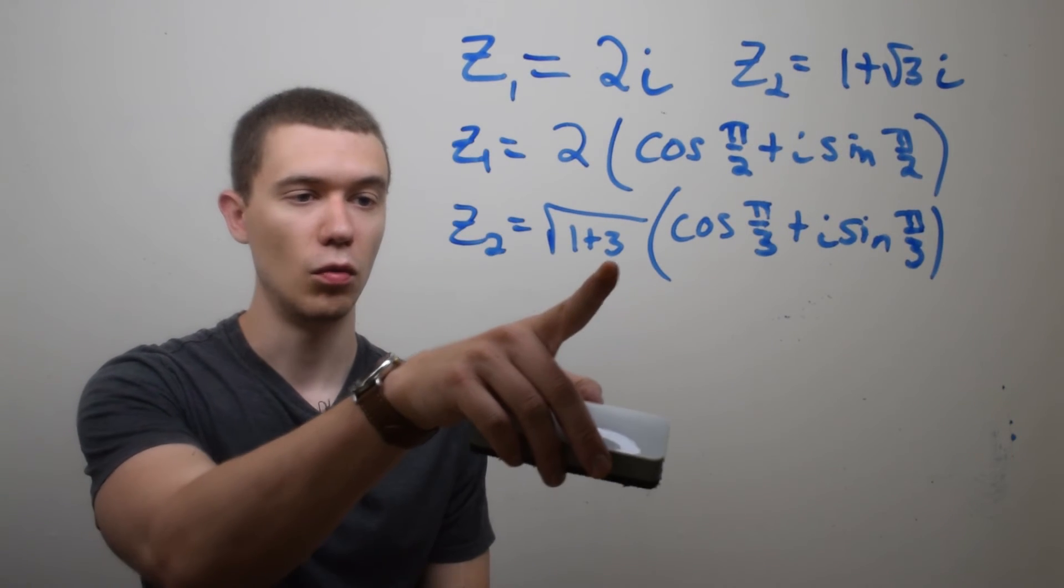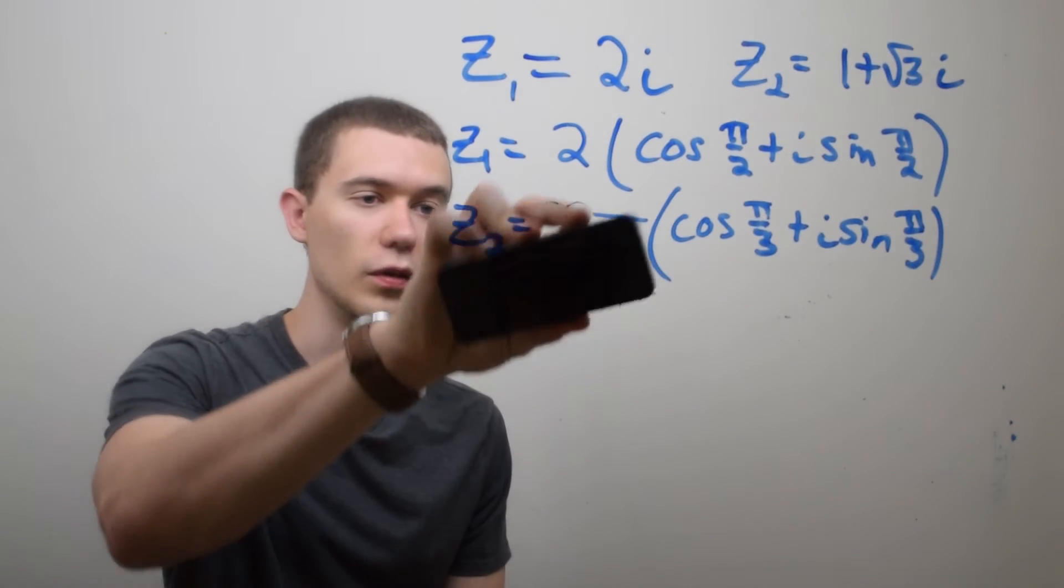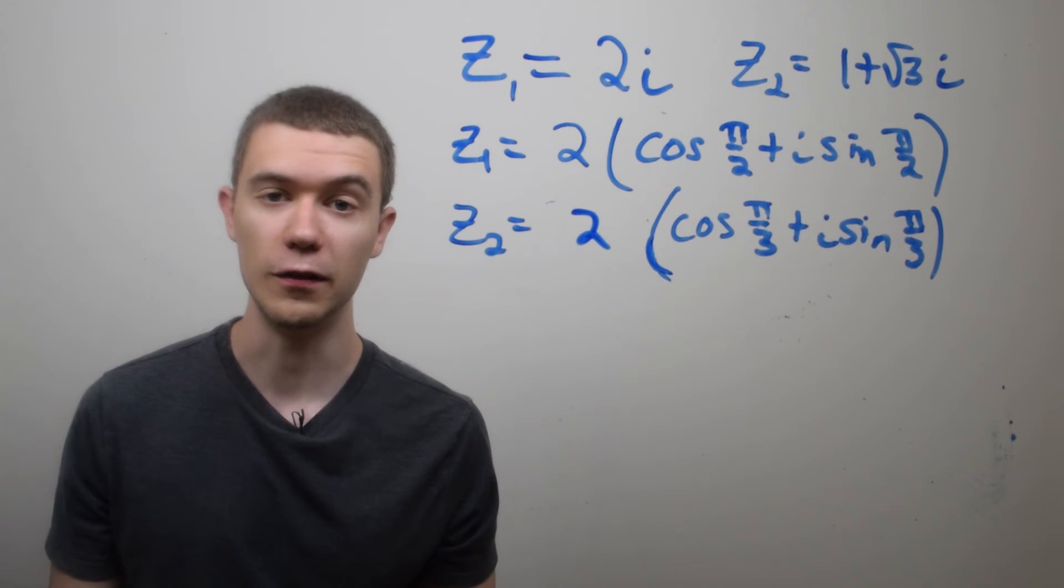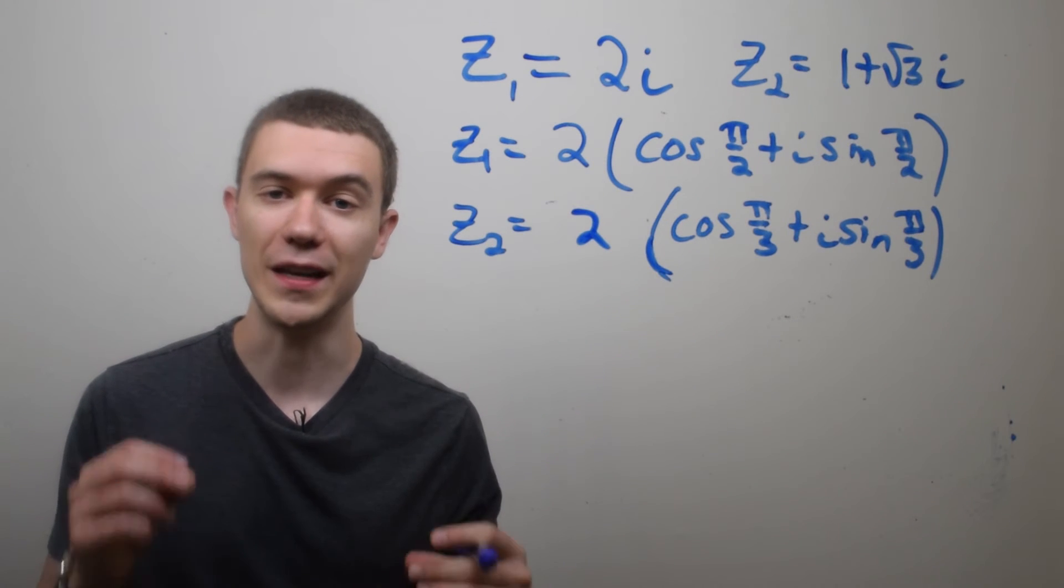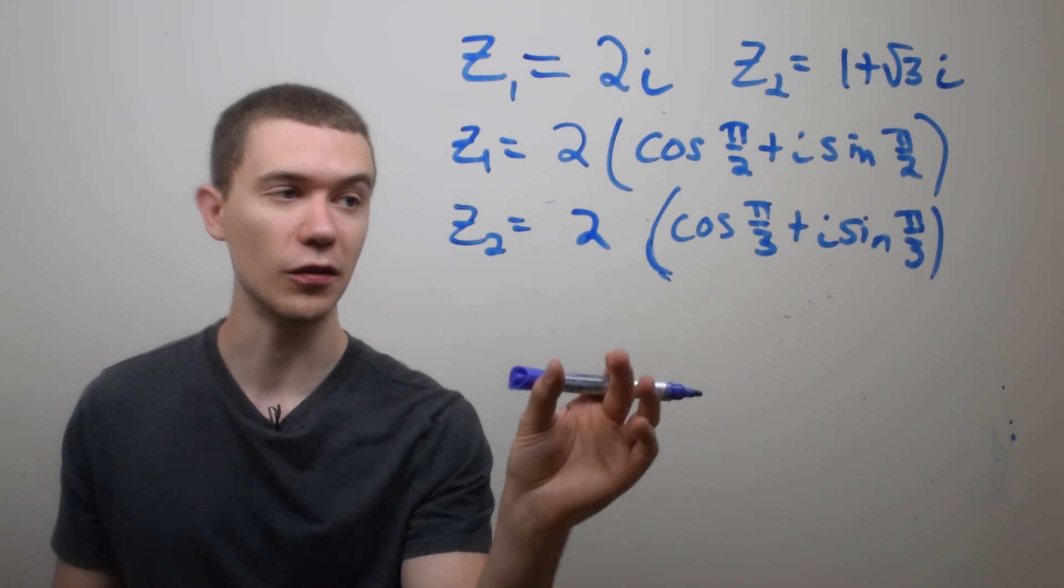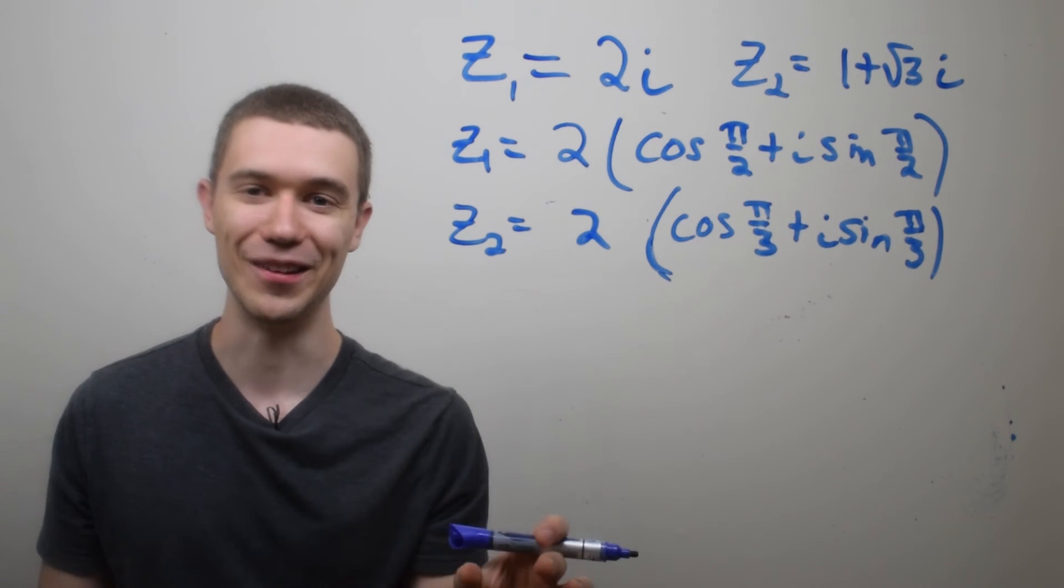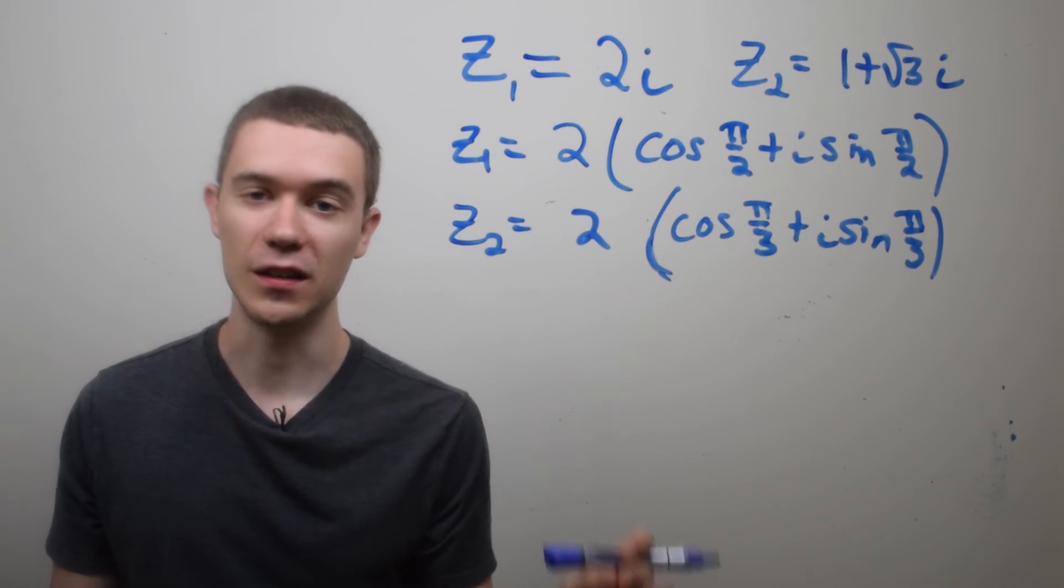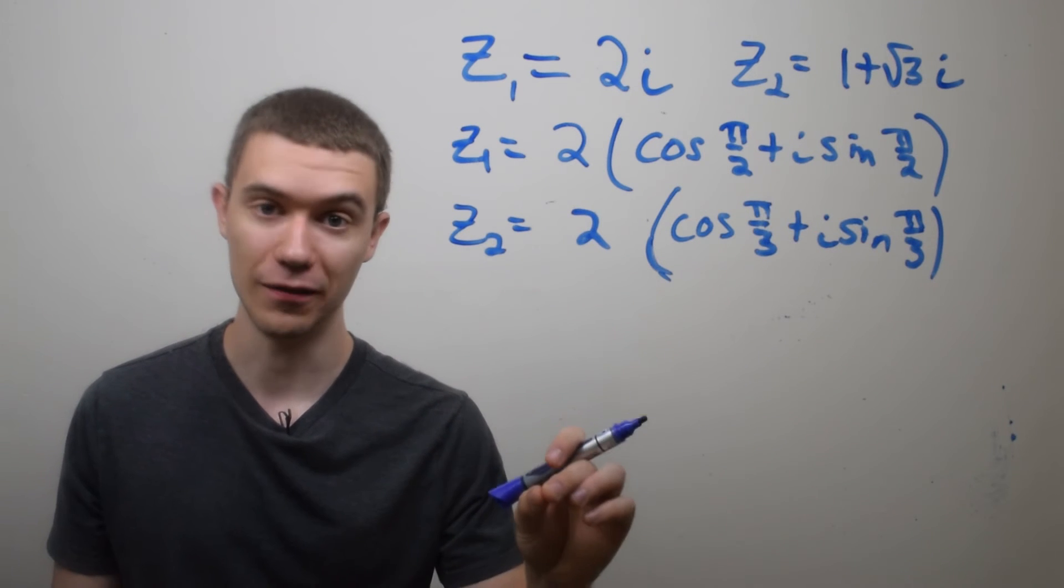Here, I'm just going to do 1 plus 3 is 4, square root it is 2. Now you could evaluate these, but that would take away our ability to easily multiply and divide complex numbers in their polar form. I'm going to leave it just like this. But doing so is going to allow us to add the arguments and subtract the arguments when I multiply and divide respectively.